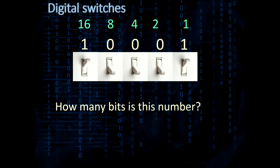So how many bits is this number? It's a five-bit number. One, two, three, four, five. So it doesn't matter what the place values are, it's just a five-bit number, a five-digit number.